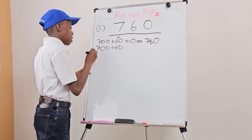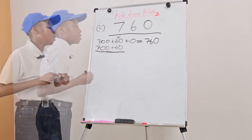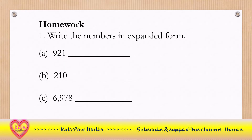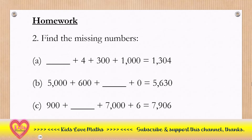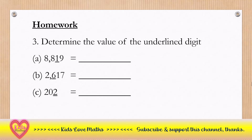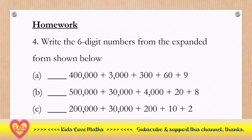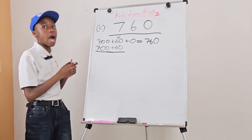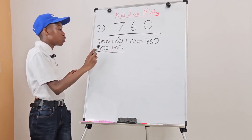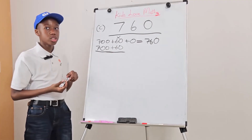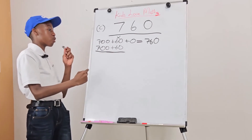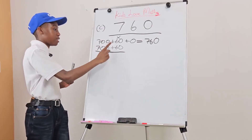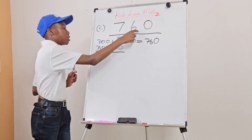So this is how you would write it. For homework: the first question will be writing numbers in expanded form; the second question is finding the missing numbers in expanded form; then determine the value of underlined digits; and the last question is to write 6-digit numbers from expanded form. A good example is how we solved letter C — you saw how we broke it up into expanded form, so it's like rewriting it backwards: 700 plus 60 gives us 760.